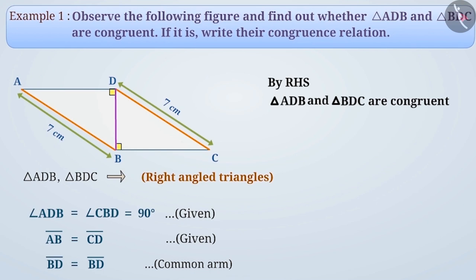So, let us symbolically write the relation of their congruence. Can we write this as triangle ADB is congruent to triangle BDC? Give it a thought. Absolutely right. We cannot write it like this.